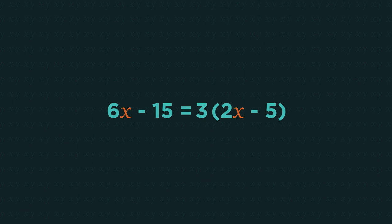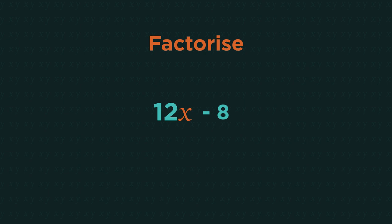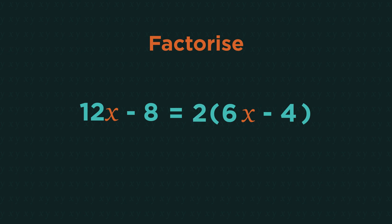To factorize we look for the highest common factor of every part of the expression, which was 3 in this example. So let's have a look at another example. What is the highest common factor of 12x and negative 8? Two goes into both but it's not the highest. We want the highest common factor which is 4.